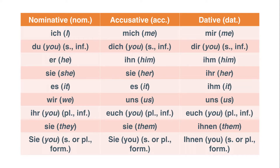You'll notice all the sie forms: as we said, for 'she,' for 'they' singular, for 'they' plural, and for formal 'you,' singular and plural. In the accusative, ich turns into mich, then ihn, sie, es, uns, euch, sie, and Sie.